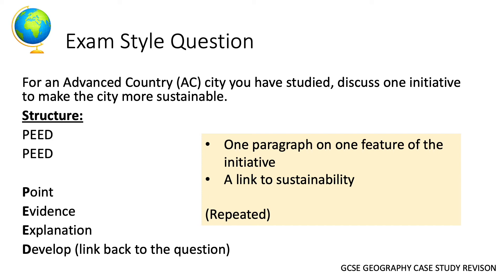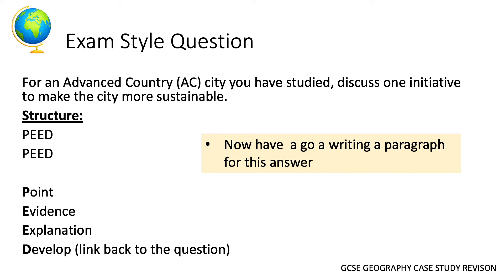Now let's look at an exam-style question: 'For an AC city you have studied, discuss one initiative to make the city more sustainable.' It's a six-mark question. We follow the PEED structure, and as a 'discuss' question it requires both AO1 and AO2 responses. The key thing is that we must link to sustainability in the answer. Pause the video now to have a go before playing to read part of a model answer.